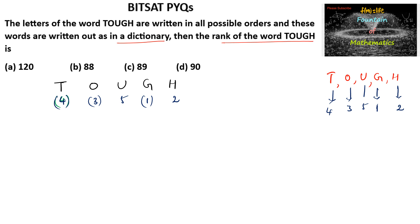Coming from the left side, below 4 there are three numbers smaller than it (3, 1, and 2), so we write 3. Below 3, towards the right side, we find only two numbers (1 and 2), so we write 2. Below 5, to the right side, there are two letters whose position is less than 5, so we write 2. Below 1 there is no smaller number, so we put 0, and below 2 also there are no smaller numbers, so we put 0.